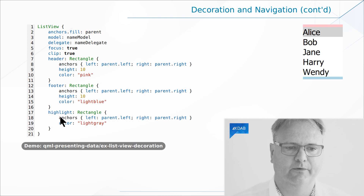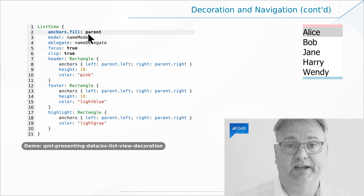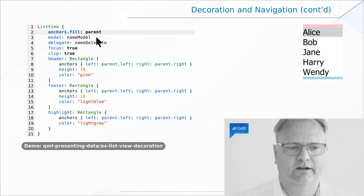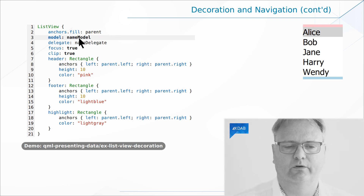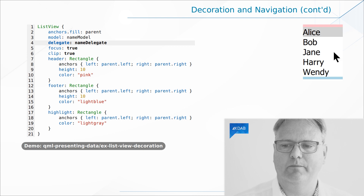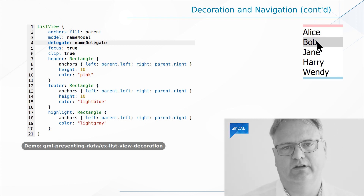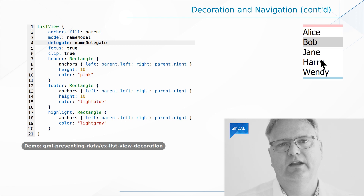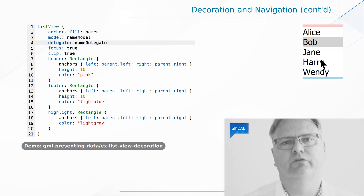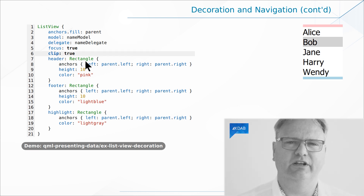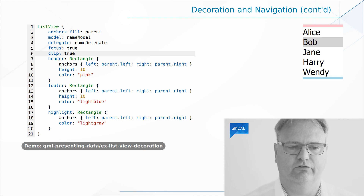Here's my ListView in code. I fill my parent and set up my model, just as in the previous video. I set up a delegate — that's how I paint each item inside the ListView. I say 'focus: true' because the ListView supports keyboard focus; I'll show you that up and down arrow keys already work out of the box. I also say 'clip: true' — I'll dedicate a video to discussing clipping in the ListView.